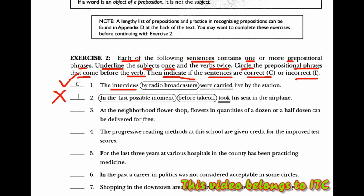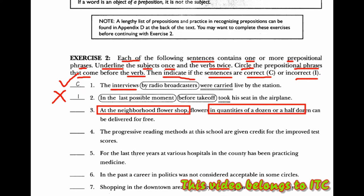Pada bagian nomor 3, yang digaris bawahi adalah 'at the neighborhood flower shop' sebagai frasa preposisi, dan 'in quantities of a dozen or half dozen' juga frasa preposisi. Tapi kita memiliki subjek di sini, yaitu 'flowers', dan 'can be delivered' digaris bawahi dua kali karena dia merupakan kata kerja. Maka kalimat ini adalah benar, yaitu correct.